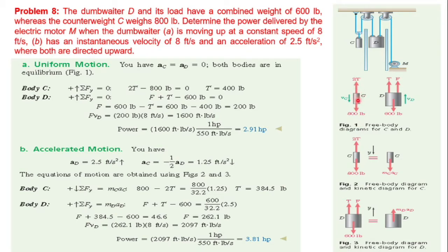From the equilibrium diagram, the sum of forces in the y-direction equals zero. For the counterweight: 2T minus 800 equals zero, giving T = 400 lb. For body D, taking upward as positive and downward as negative: T plus F minus 600 equals zero. Solving, F equals 600 minus T, so F equals 200 lb.